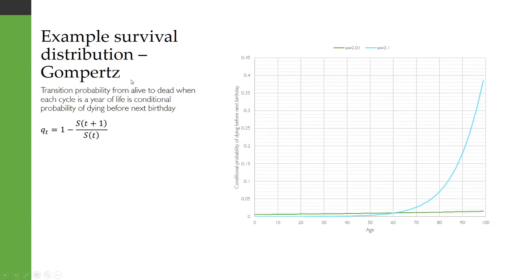If we were to use that in a Markov cohort simulation, then the transition probability from alive to dead, when each cycle is a year of life, is the conditional probability of dying before the next birthday. So that's 1 minus the conditional survival function.